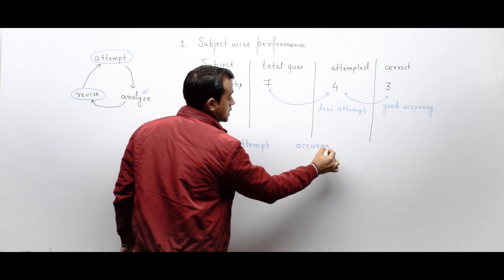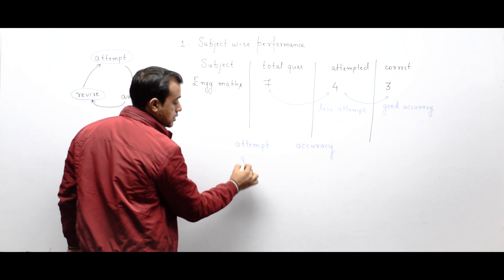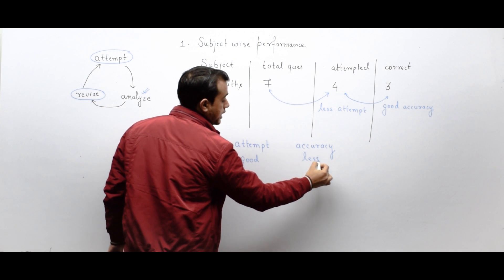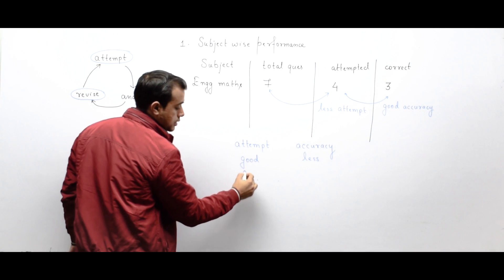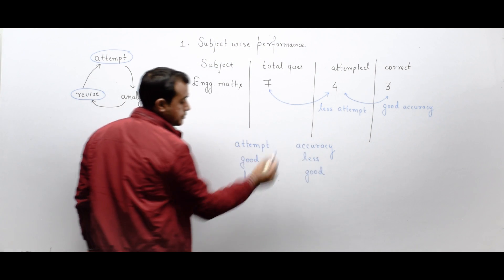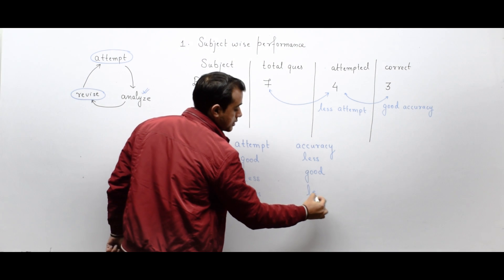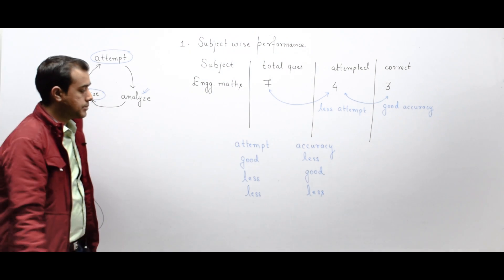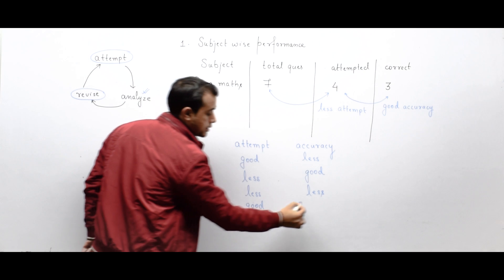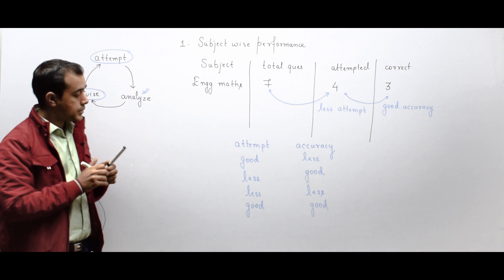There are two parameters to talk about, giving four possible cases: good attempt with less accuracy; less attempt with good accuracy; less attempt with less accuracy; and good attempt with good accuracy. These are the possibilities for each subject.